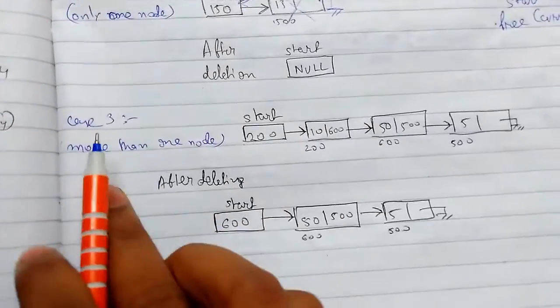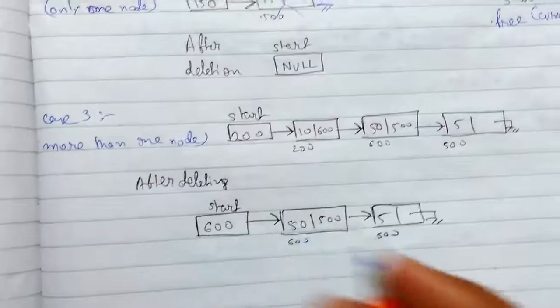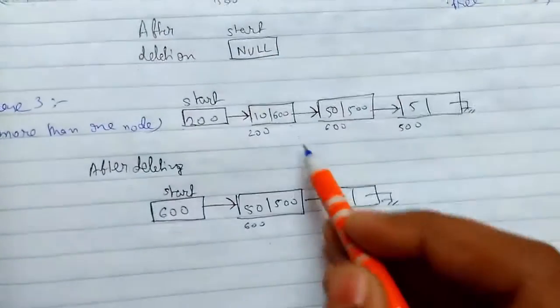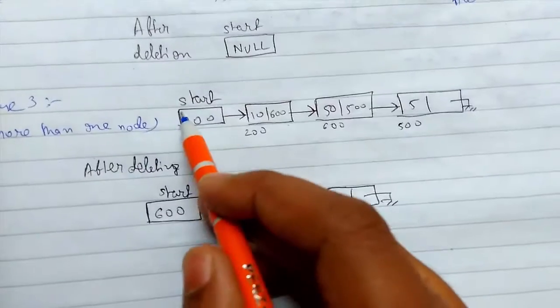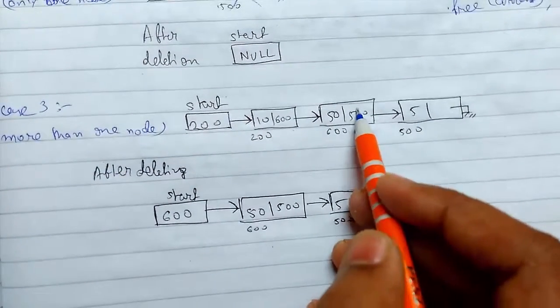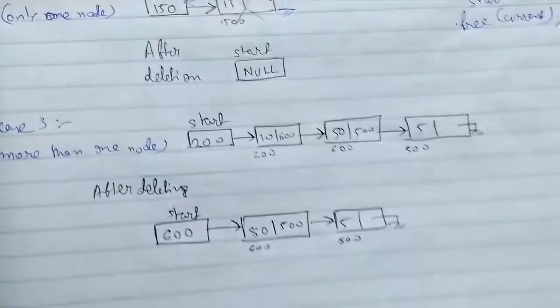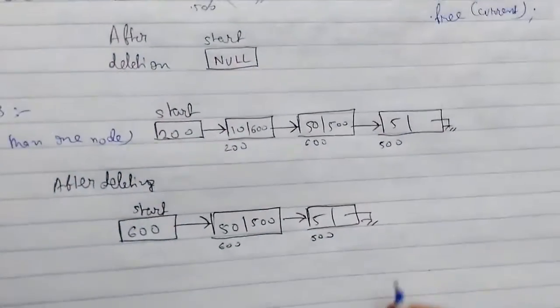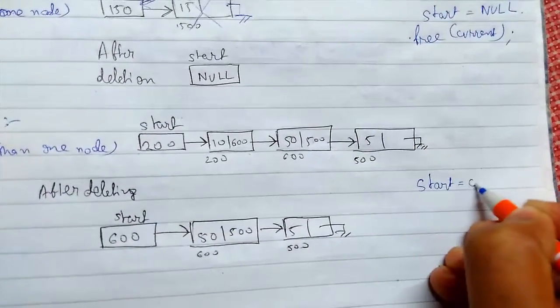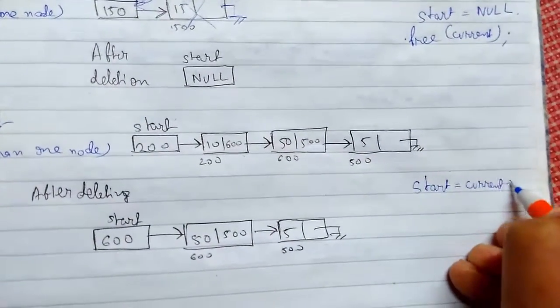Now, the third case is when there are more than one node present and we need to delete this one. So to do that, we are seeing that we need to upgrade the start and nothing more. We need to get this value here. So to do that, we need to simply, if we will do start equals current arrow next.